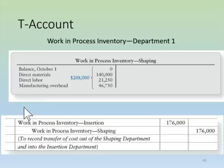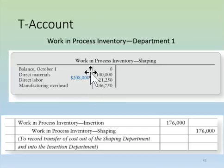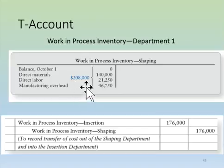From the previous entries, the T-account for work in process looks like this: a zero beginning balance, plus direct materials of $140,000, plus direct labor of $21,250, plus manufacturing overhead of $46,750, totaling $208,000. By performing the five-step process we determined how much of the $208,000 should be assigned to units still being worked on, which is $32,000, and how much to units completed and transferred out.